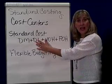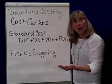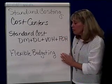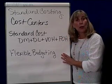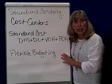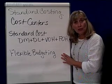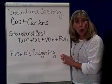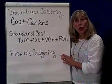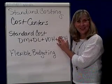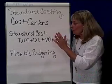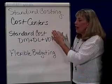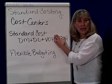Once we have these standards, we can evaluate actual performance against them. We do that at the end of the year by preparing a flexible budget. A flexible budget is based on the actual output at the standard quantity at the standard cost — in other words, these standards. The flexible budget is prepared at the end of the year; standard cost is determined at the beginning of the year.